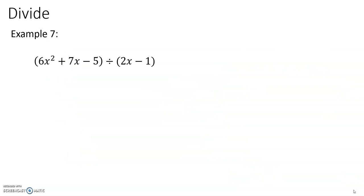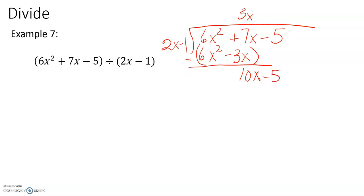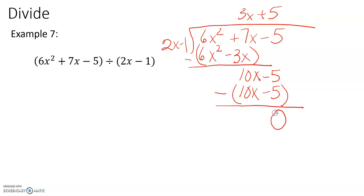Example 7: 6x squared plus 7x minus 5 divided by 2x minus 1. 2x times what is going to give us 6x squared? That's 3x. Watch your subtraction, and we have 10x minus 5. 2x times what gives us 10x? That's plus 5. It subtracts and our remainder is 0. So 6x squared plus 7x minus 5 divided by 2x minus 1 is 3x plus 5.